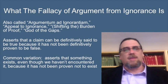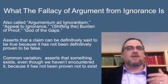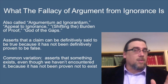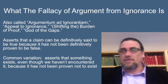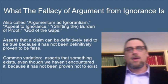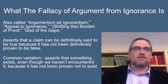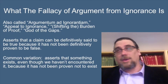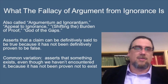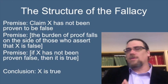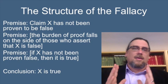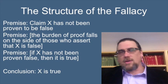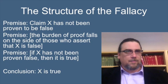What is it? It asserts that a claim can be definitively said to be true because it has not been definitively proven to be false. Or it can go the other way: something is definitely false because you haven't proven it's true. A variation involves existence — you say something exists because it has not been proven not to exist, or vice versa.